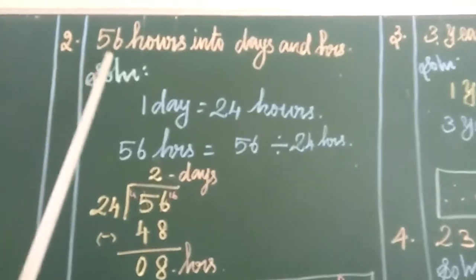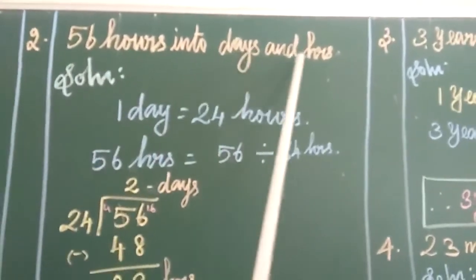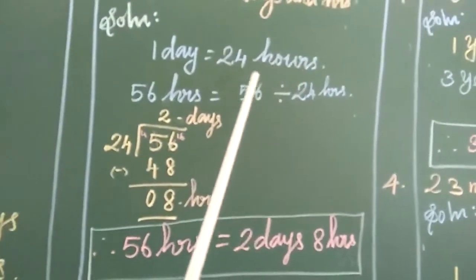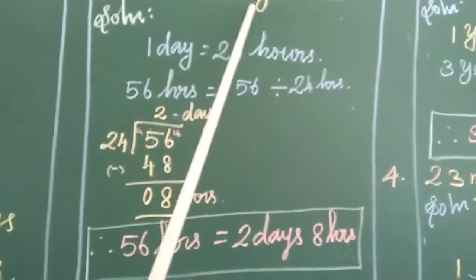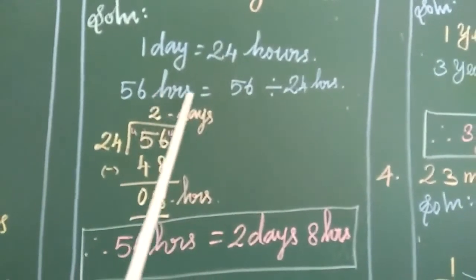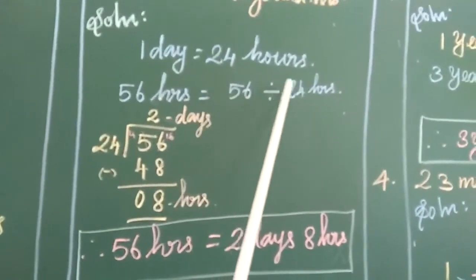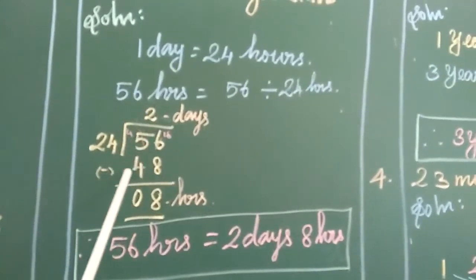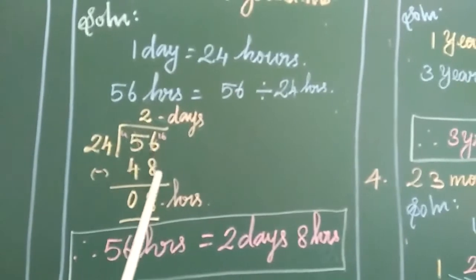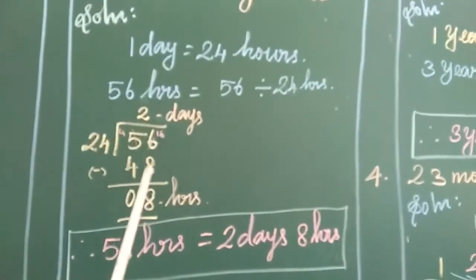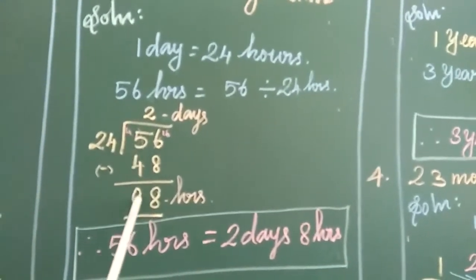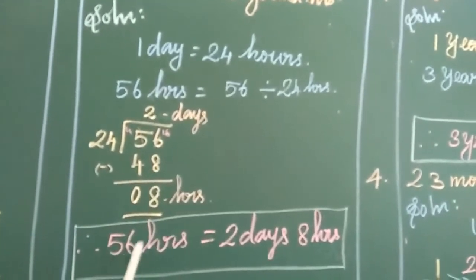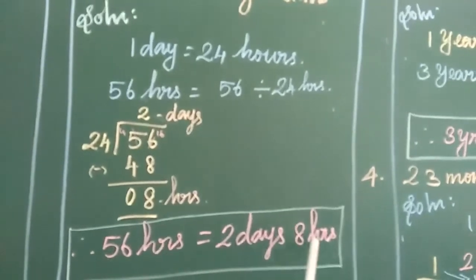The second one, 56 hours into days and hours. Solution: 1 day is equal to 24 hours. So, hours to days are divided. 56 hours is equal to 56 divided by 24. 24 twos are 48, 56 minus 48 equals 8. Quotient are days and remainder are hours. Finally, 56 hours is equal to 2 days, 8 hours.